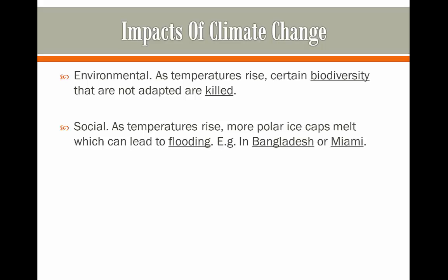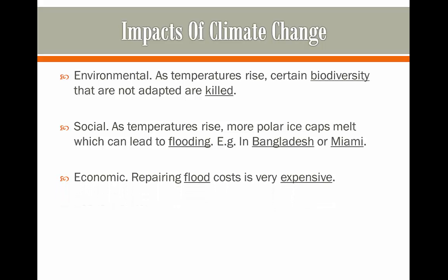A social effect is that as temperatures rise, more polar ice caps are going to melt. For example, this can then flood Bangladesh or Miami, which are very close to sea level. This flooding can lead to destruction of homes and people being left homeless. Repairing flood damage is also very expensive — as polar ice caps melt and we get flooding in areas such as Bangladesh, it's going to be very expensive to restore all of the houses and damages back to normal.